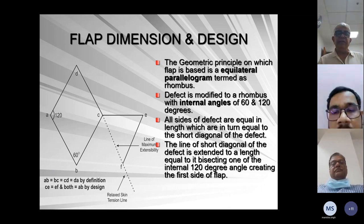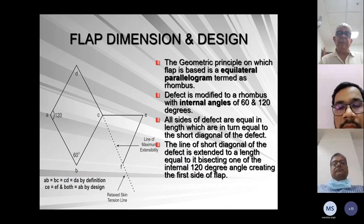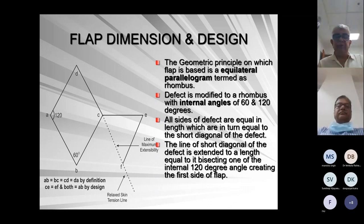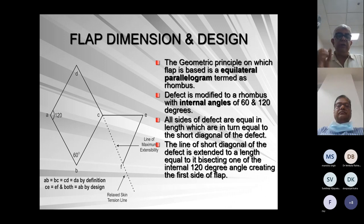Regarding flap dimension and design: the geometric principle on which the flap is based is an equilateral parallelogram termed a rhombus. The defect is modified to a rhombus with internal angles of 60 and 120 degrees — two of 60 and two of 120. All sides of the defect are equal in length, which are equal to the short diagonal of the defect. Students should remember this — whenever asked in the exam to draw, they should draw the short diagonal. The line of the short diagonal is extended to a length equal to that diagonal, bisecting one of the external angles of 120 degrees.